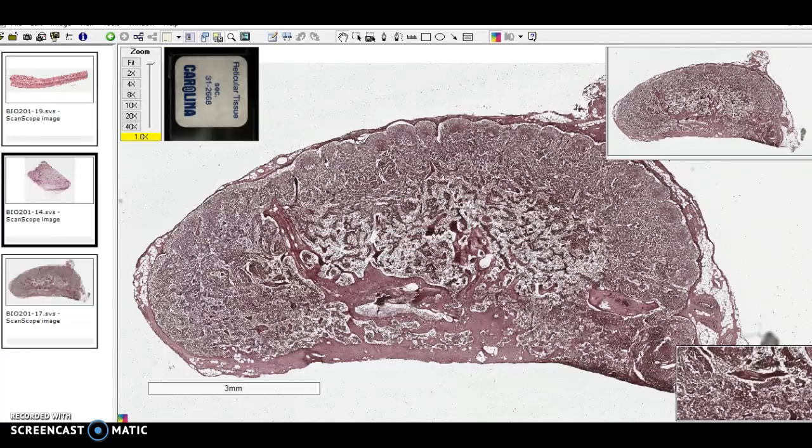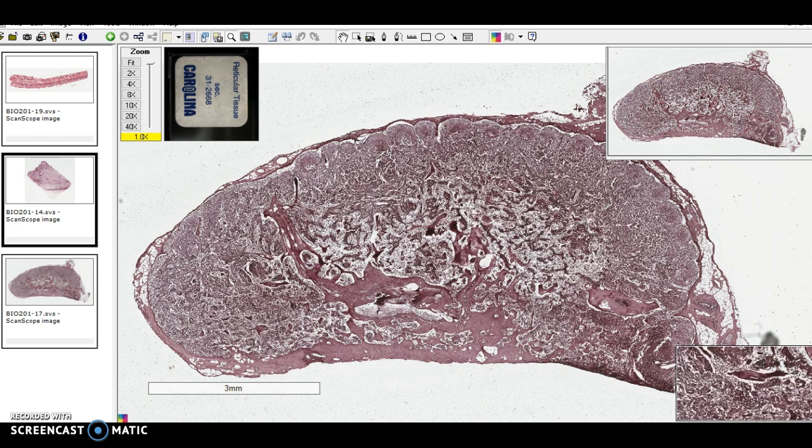Reticular tissue is a specialized tissue that primarily forms a framework for lymphatic organs such as lymph nodes, the spleen, the thymus, and bone marrow.